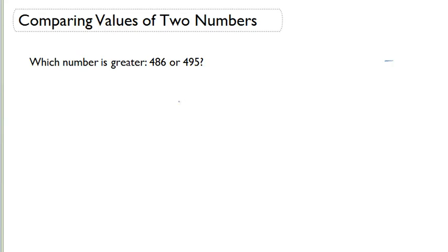We are going to now compare values of two numbers. Which number is greater? They give us two numbers here. The first number they give us is 486. The second number they give us is 495.